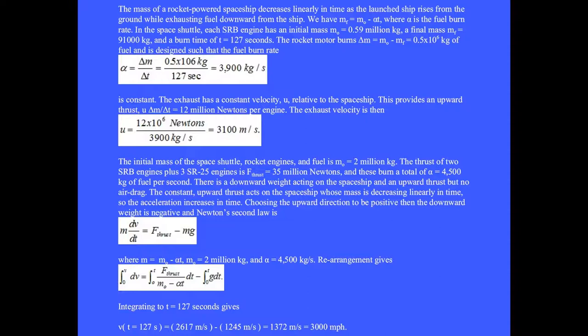A final mass m sub f equals 91,000 kilograms and a burn time of t equals 127 seconds. The rocket motor burns delta m equals m0 minus m sub f equals 0.5 million kilograms of fuel and is designed such that the fuel burn rate alpha equals delta m delta t equals 3900 kilograms per second.